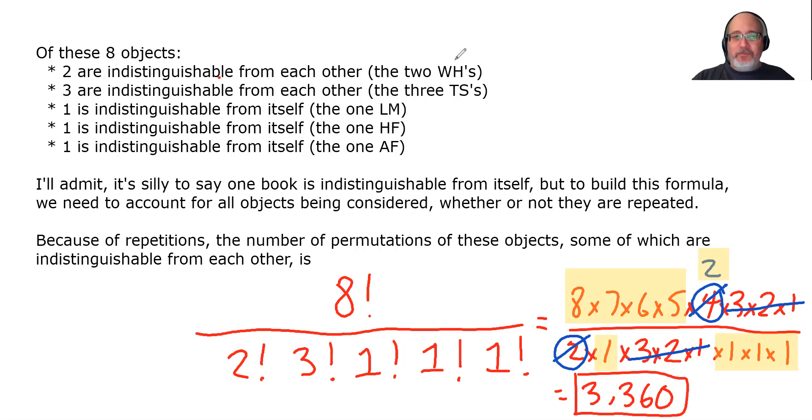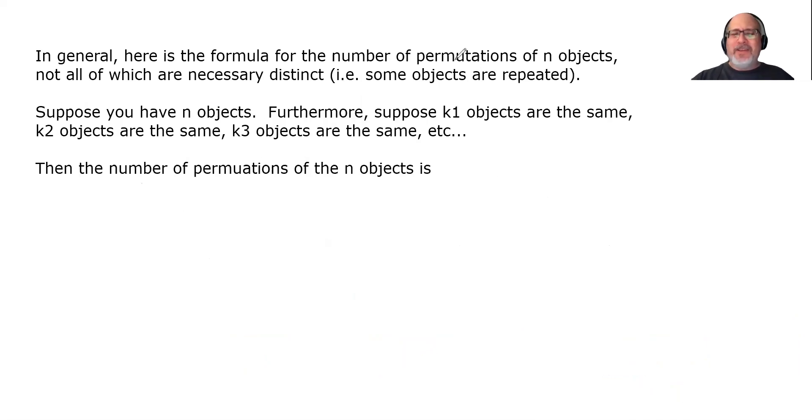Let's make a formula out of this. This is going to look a little funny, but it's actually pretty straightforward. In general, here's the formula for the number of permutations of n objects, not all of which are necessarily distinct. In other words, some objects are repeated. Suppose you have n objects. Furthermore, suppose that K1 objects are the same. And when I say K1, I really mean K subscripted with a 1. K2 objects are the same. K3 objects are the same, etc.